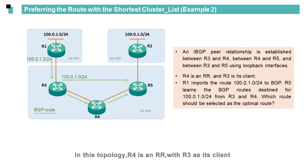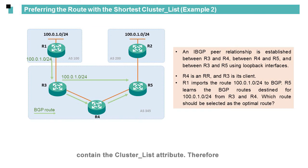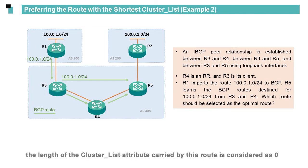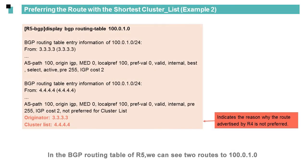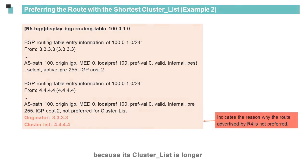In this topology, R4 is an RR with R3 as its client. By default, the route that R5 learns from R3 does not contain the cluster list attribute, so the length of the cluster list attribute is considered as 0. The length of the cluster list of the route learned from R4 is 1. Therefore, the route learned from R3 is preferred. In the BGP routing table of R5, we can see two routes to 100.0.1.0/24. The first route is preferred, and the second route is not preferred because its cluster list is longer.